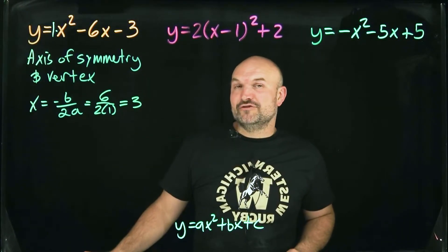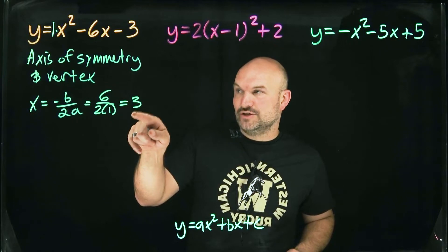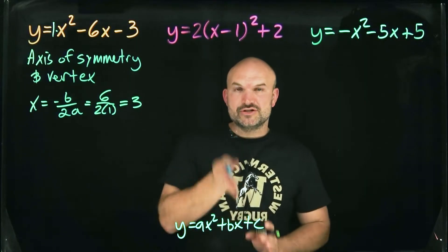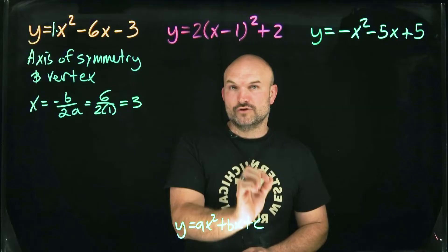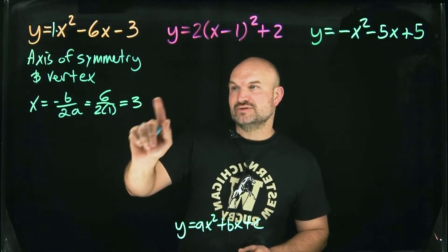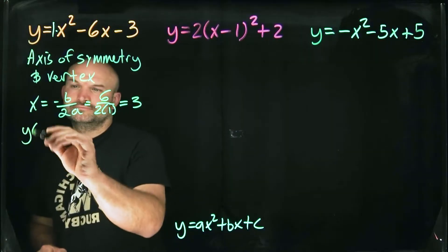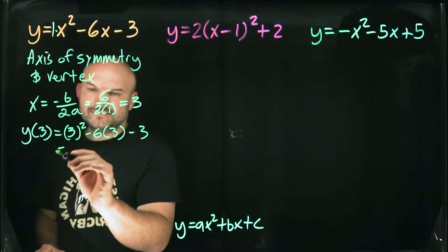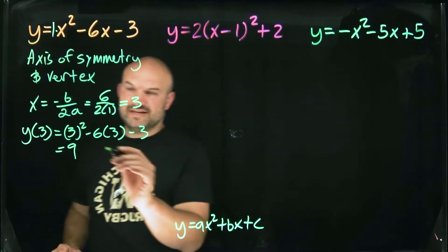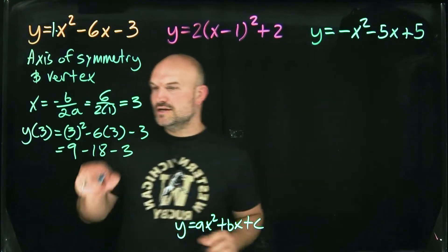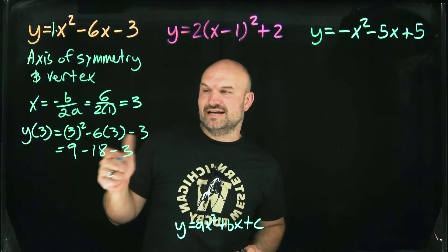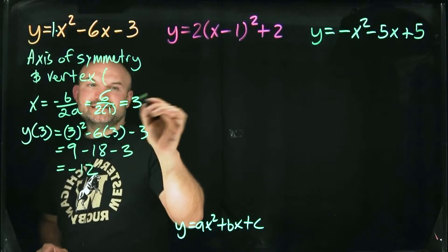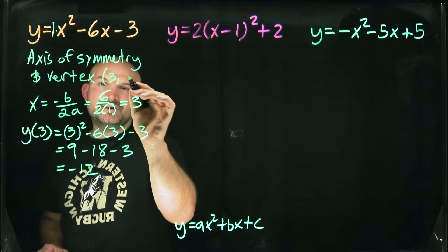To find the vertex, we take x equals three and plug it into the equation to find the y-value, since the vertex lies on the axis of symmetry. We get three squared equals nine, negative six times three equals negative eighteen, minus three. So nine minus eighteen is negative nine, minus three equals negative twelve. The vertex is at (3, -12).